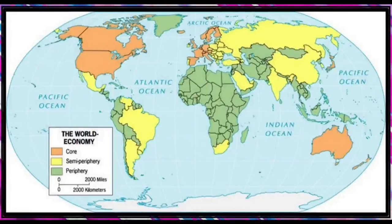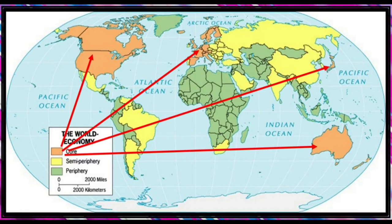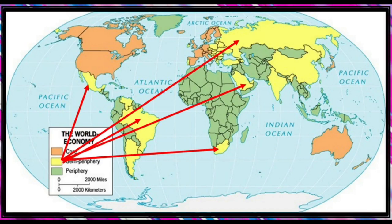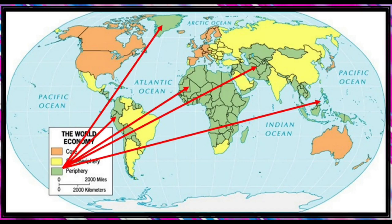Here is the map of the world economy based on Emmanuel Wallerstein. The orange shaded regions are the core states. The yellow shaded regions are the semi-peripheral states. And the green shaded regions are the peripheral states — the areas which are least developed. Our country belongs to this kind of states.